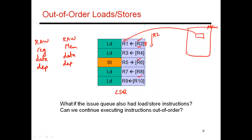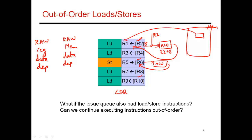The first thing we need to do is take care of the effective address calculation, which only requires checking for register data dependencies. As soon as register R2 is made available, I can compute the effective address - the ALU reads the value of R2, adds the offset A to it, and produces an effective address which gets put back into the load-store queue. It's not placed in R1; this is just the effective address. Then as R6 is known, that also goes through the ALU operation, computes the effective address, and stores that address back in the load-store queue.